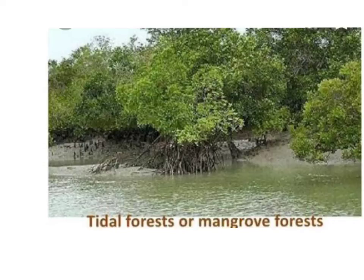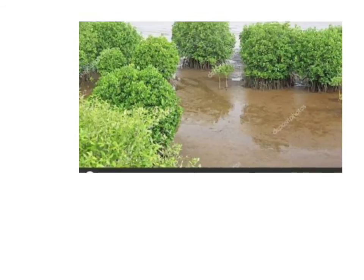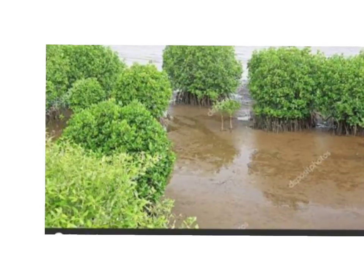Tidal forests are also called mangrove forests. These forests grow in the deltas of rivers like the Ganga, Godavari, and Mahanadi. The tidal or mangrove forests found in India are also called Sundarbans, and these are the largest mangrove forests in the world. These forests comprise small shrubs or trees that grow in coastal saline or brackish waters.